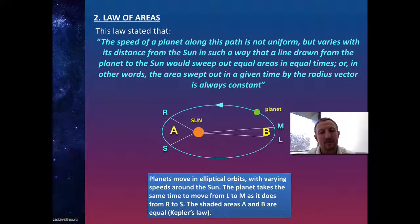Both A and B will take the same time, but in order for that to occur, the movement from R to S has got to be a lot faster than the movement from L to M. In each case, we're going to have exactly the same area created. That's his second law: equal areas will be swept out with the same time, but it's going to change the speed at which this occurs.